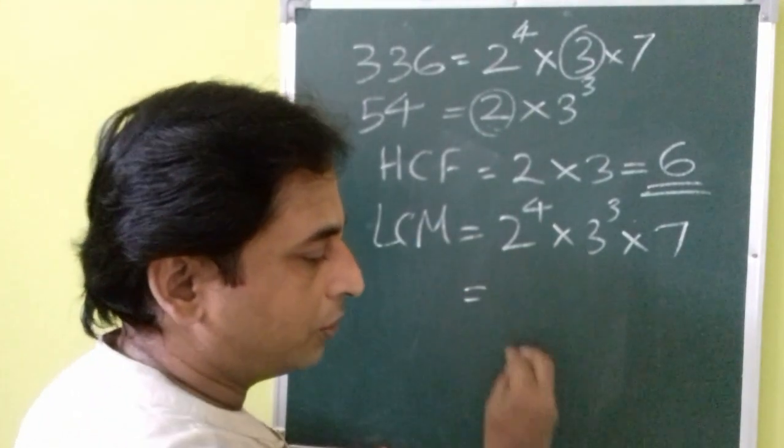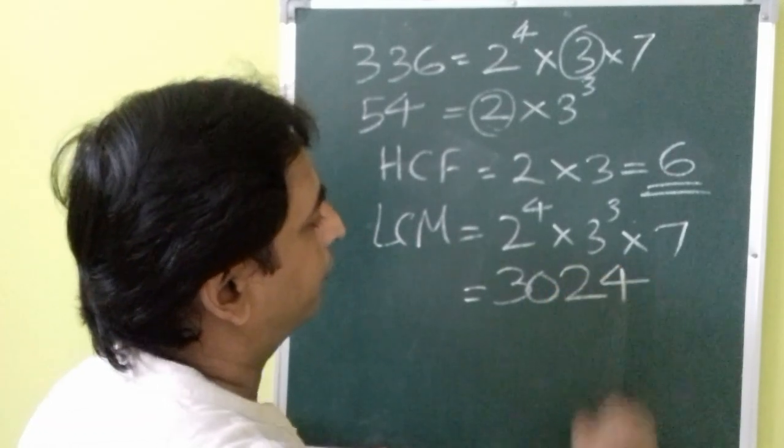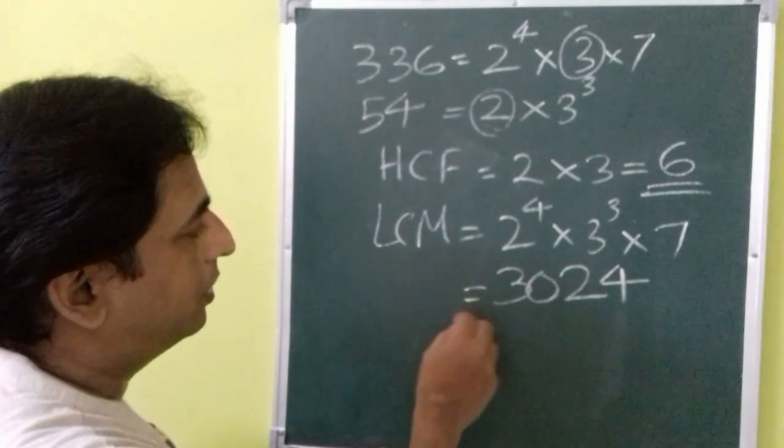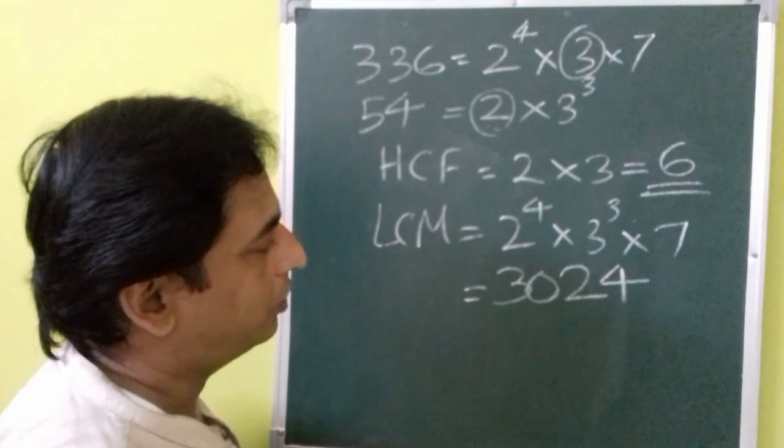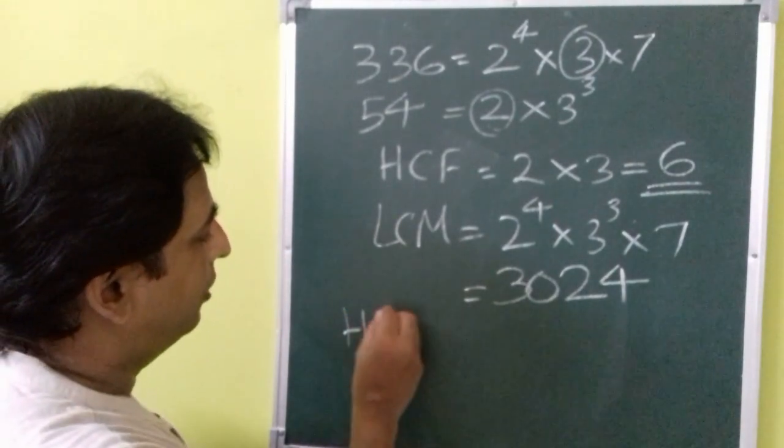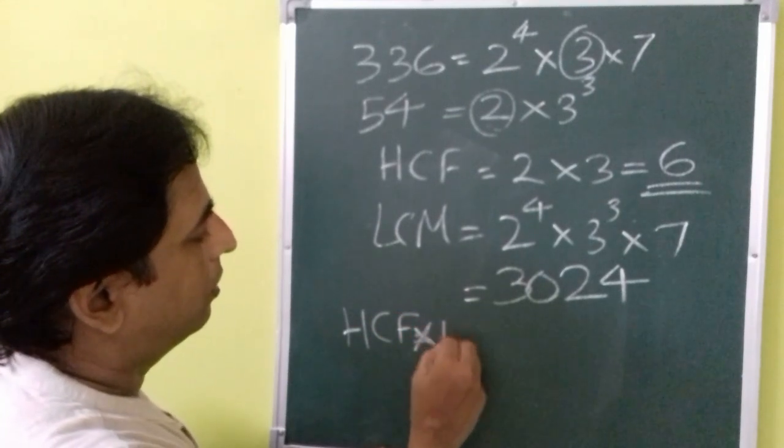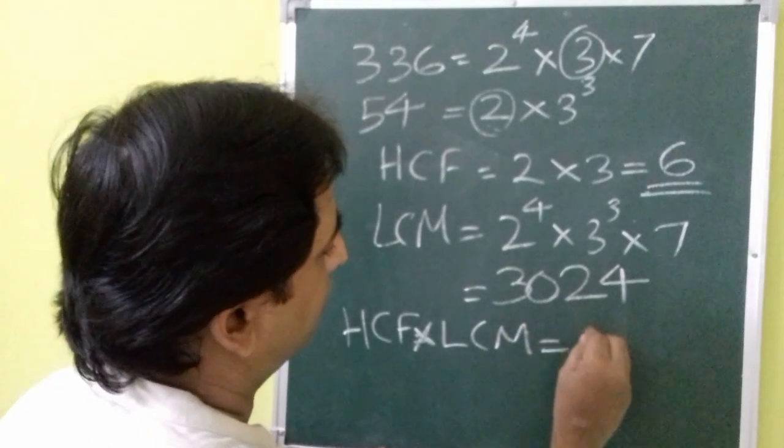When you multiply it you are supposed to get 3024. So LCM of these 2 numbers is 3024 and we need to verify whether HCF into LCM is equal to the product of numbers.